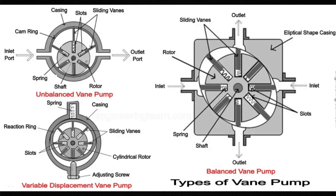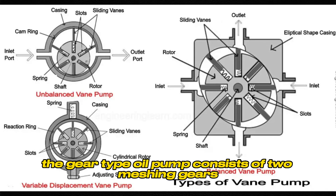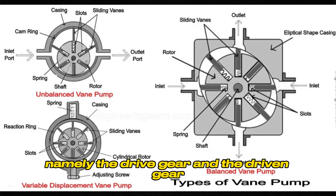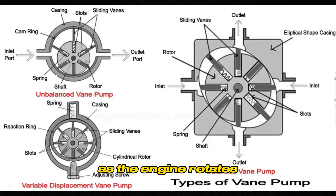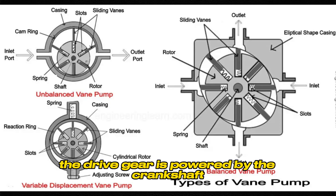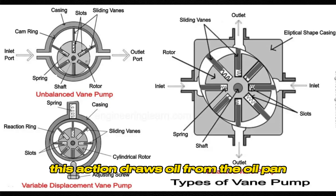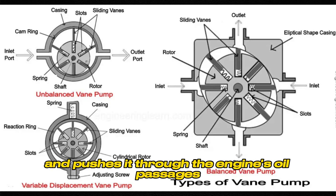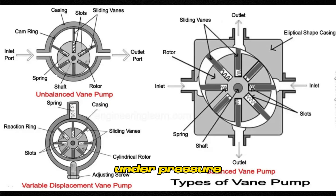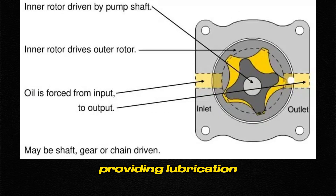The gear-type oil pump consists of two meshing gears: the drive gear and the driven gear. As the engine rotates, the drive gear is powered by the crankshaft and turns the driven gear, creating a pumping action. This action draws oil from the oil pan and pushes it through the engine's oil passages under pressure, providing lubrication.